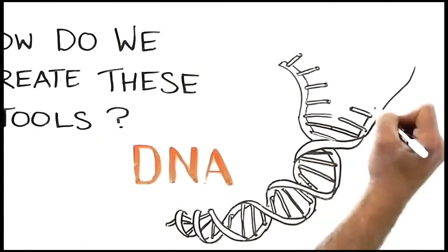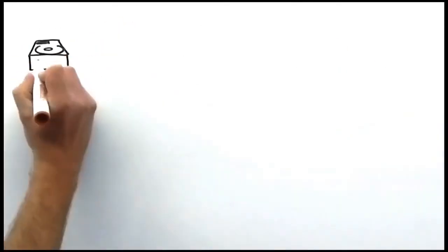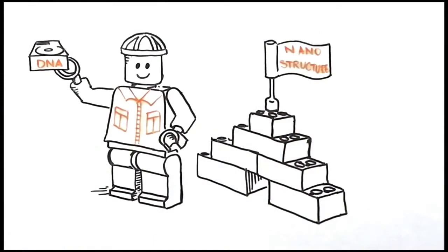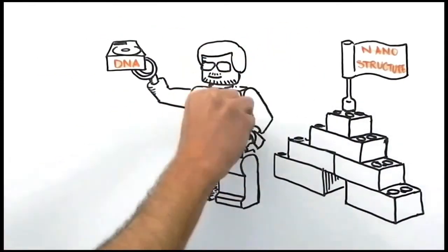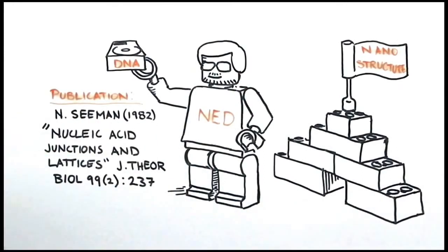And for many researchers, myself included, our molecule of choice is DNA. The reason for using DNA is that many properties that make it useful as an information storage molecule in nature also make it attractive as a nanoscale building material. And of course, everyone in our field owes a great debt to Ned Seaman, who pioneered this area of research starting with a seminal paper that he published back in 1982.